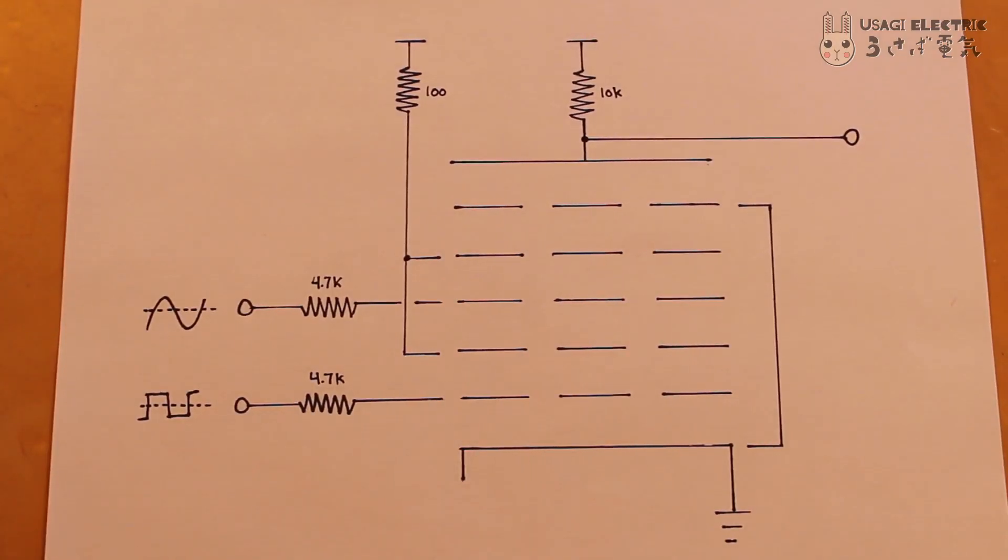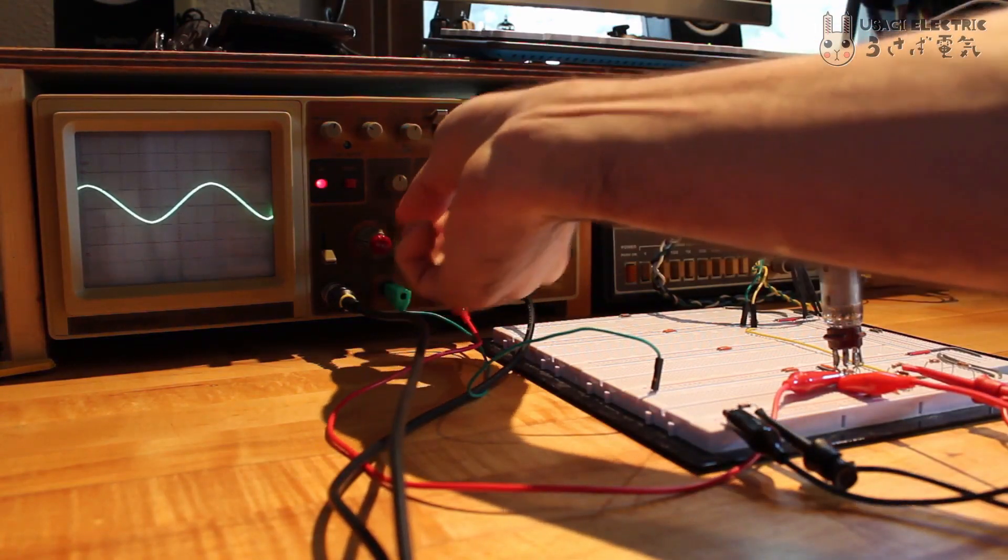This makes the heptode great for signal mixing. Here we'll be using a 6BE6 heptode set up as shown. Two different signals will be input onto the control grids, one a sine wave and one a square wave.